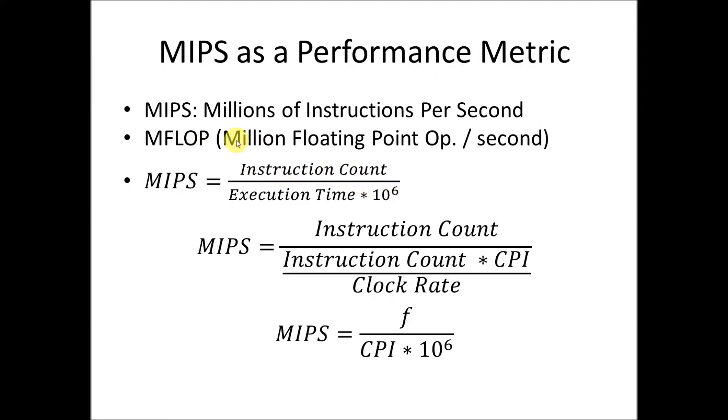This is basically saying MIPS is millions of instructions per second. So if you have the number in millions of instructions and you've got the execution time, it falls out. Basically, this divide by 10 to the 6th is the millions part, and we just want to cancel that out.